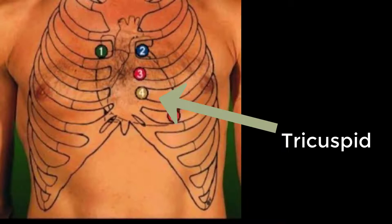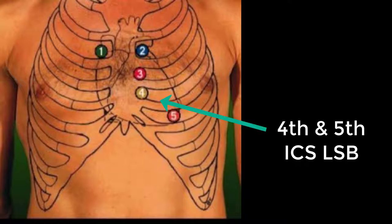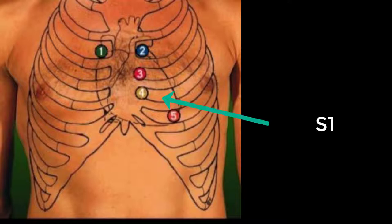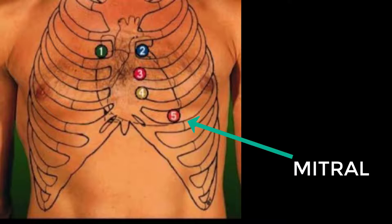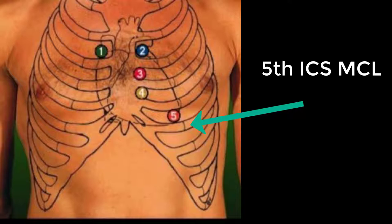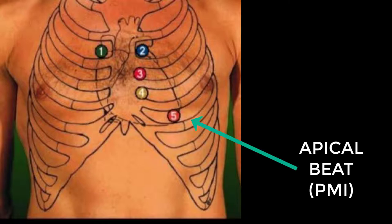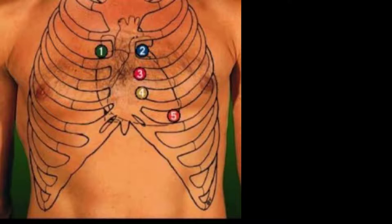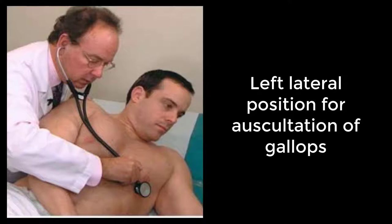Tricuspid area: place the diaphragm at the fourth and fifth intercostal space, left sternal edge. This is the anatomical landmark for the tricuspid valve. Listen for at least five seconds for the first heart sound, which represents the tricuspid valve closing. Mitral area: place the diaphragm at the fifth intercostal space, mid-clavicular line. This is the same area as the apical beat and is the anatomical landmark for the mitral valve. Listen for at least five seconds for the first heart sound, which represents the mitral valve closing. This location is where you need to concentrate for the presence of gallops, particularly as the patient assumes a left lateral side-lying position.